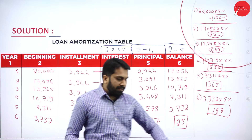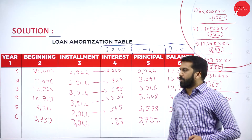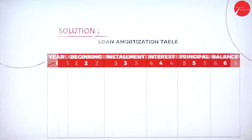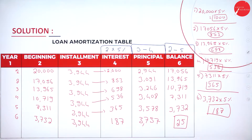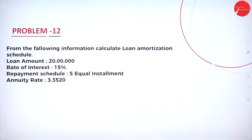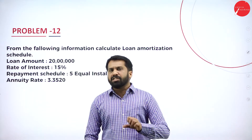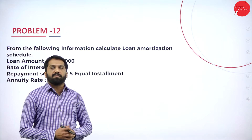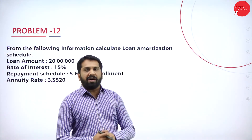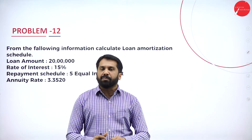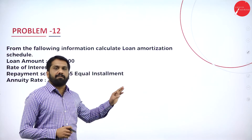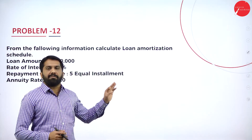I will go back to the previous slide so you can take a screenshot. This is problem number 2 and this is your loan amortization table. Now we will go to problem number 12 — the last problem on loan amortization. I will not solve this problem; it will be homework for you. Once done, please message me in the chat box with your answer, and in the next session I will give you the answer.